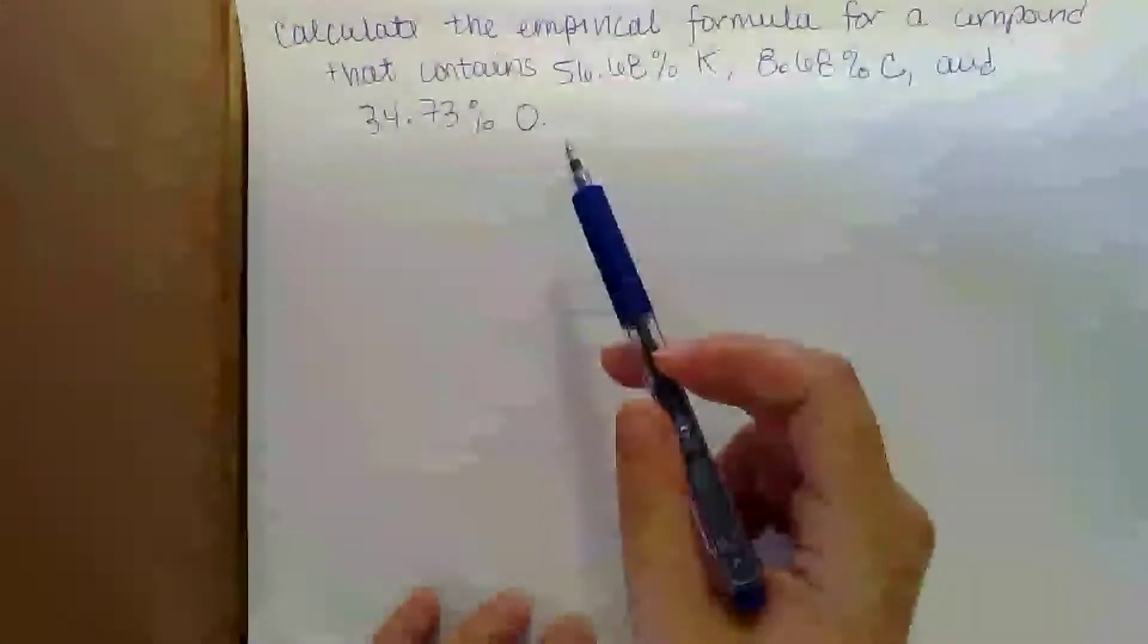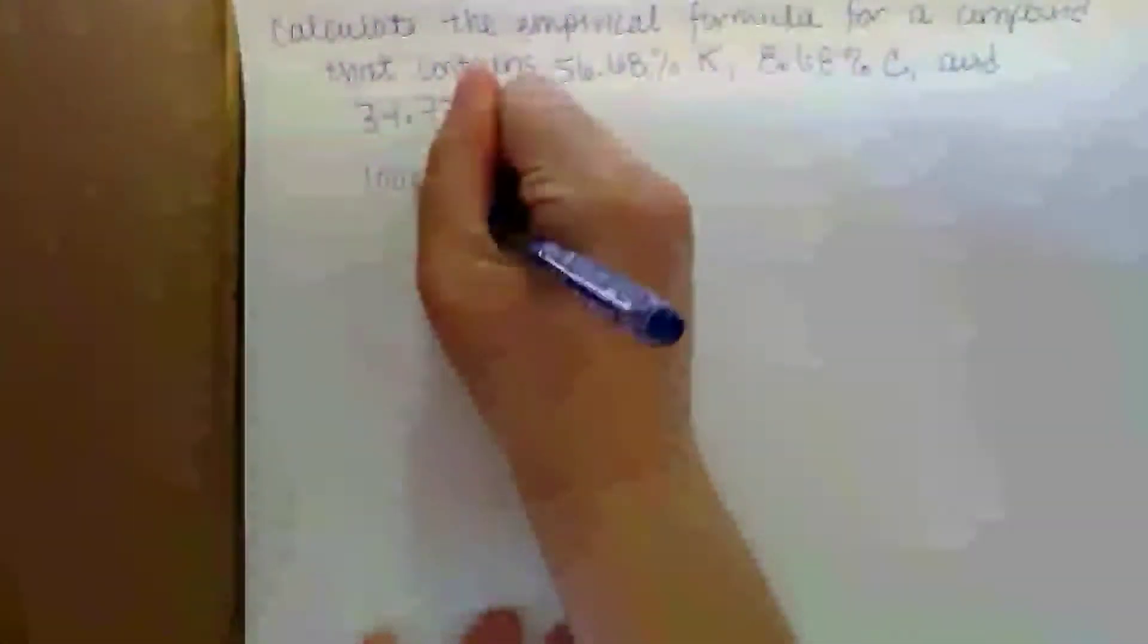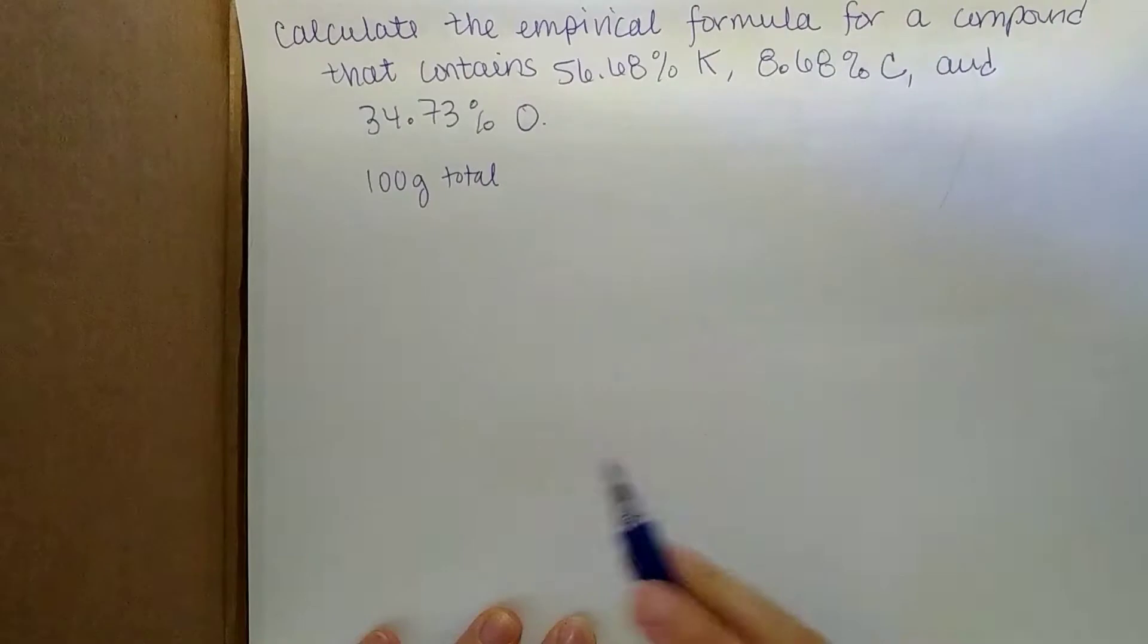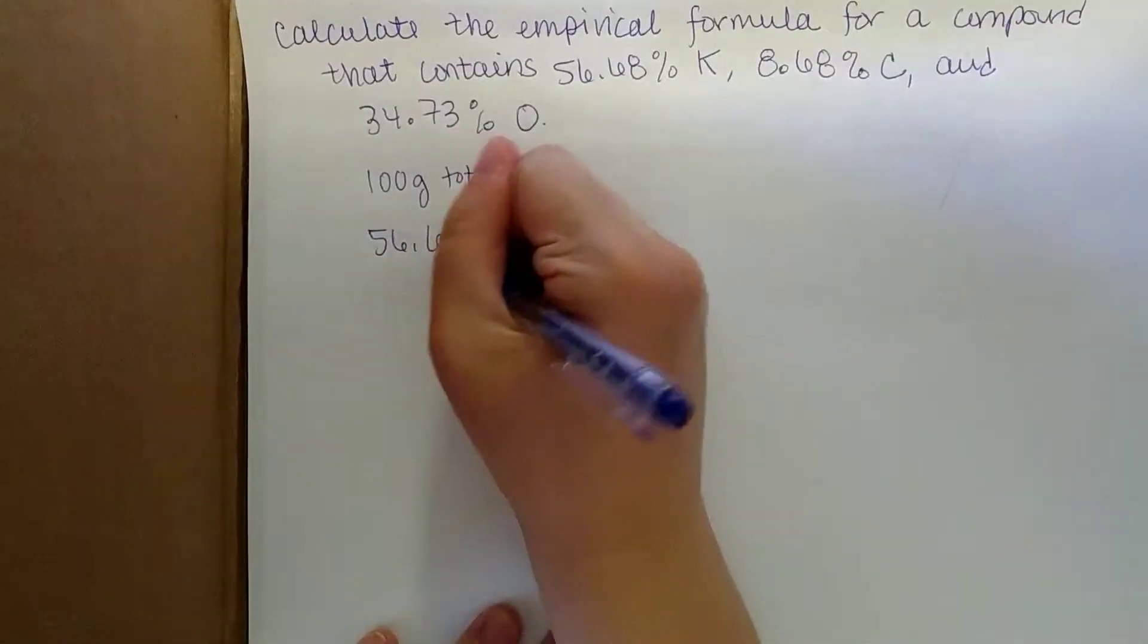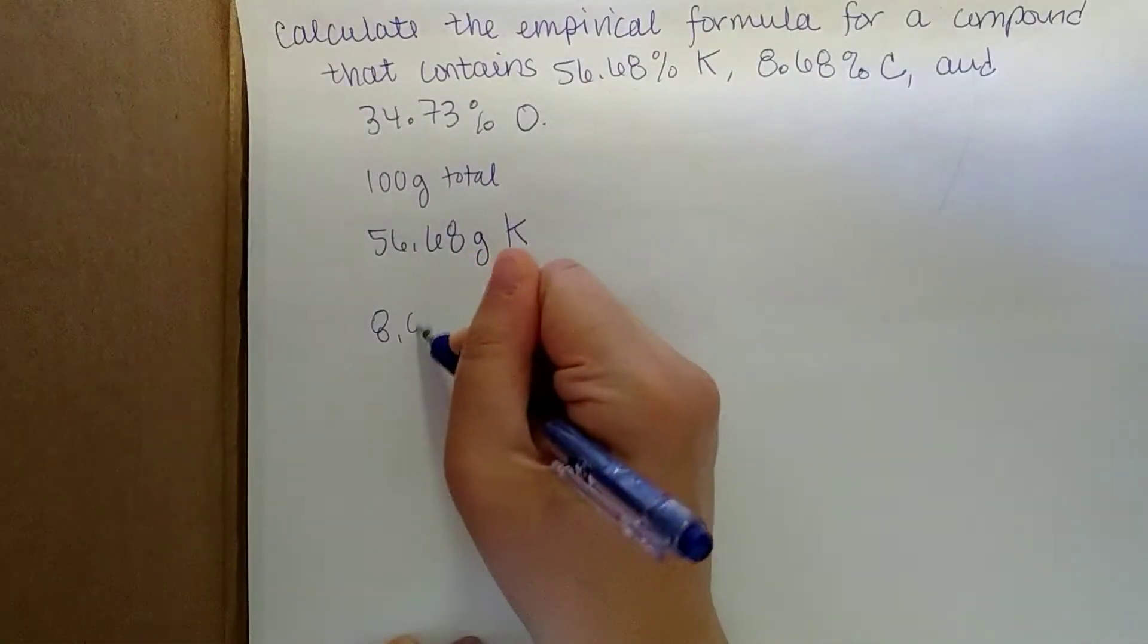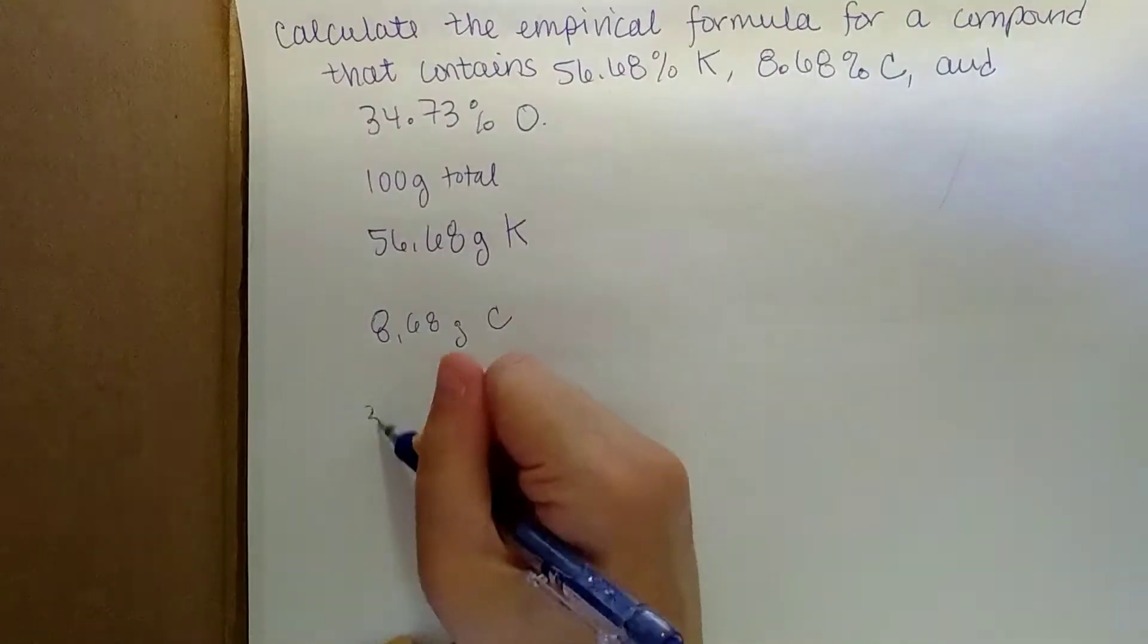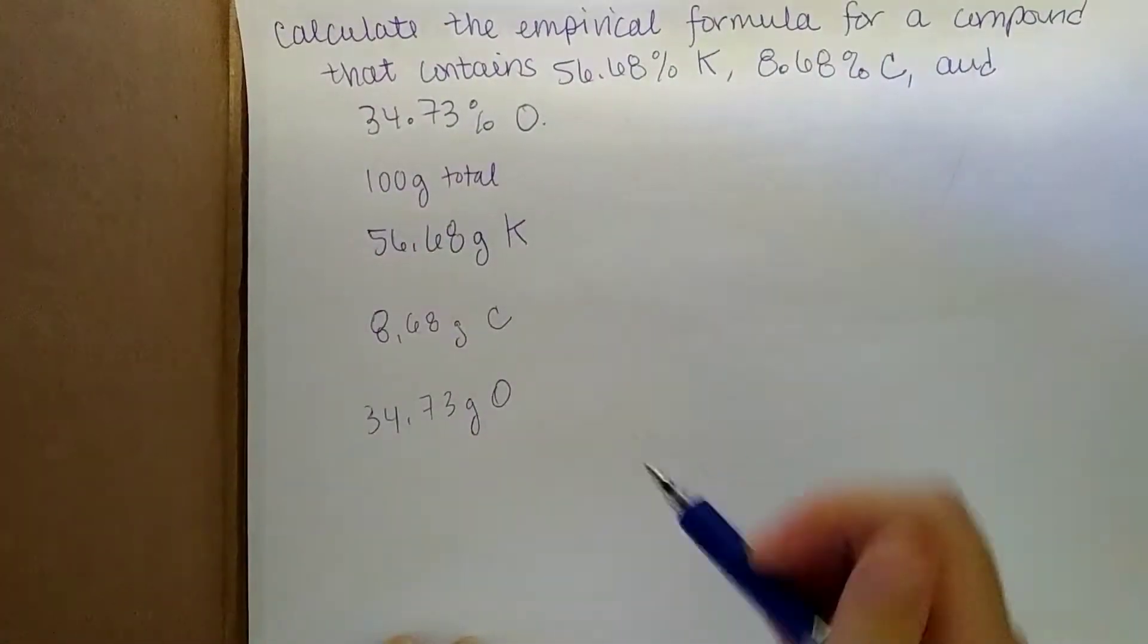Whenever we're asked to calculate a molecular formula and we are given the percent composition, we're just going to assume 100 grams total of whatever this compound is. So basically what that means for this case is that we're looking at 56.68 grams of potassium, 8.68 grams of carbon, and 34.73 grams of oxygen.